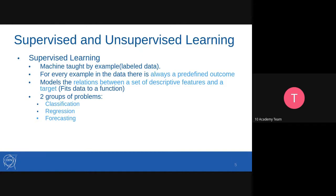The next problem type is regression. In regression, we are not trying to classify data but rather calculate a specific value from the training data, and predict a specific value on test data. Finally, there is forecasting — the process of making predictions about the future based on past and present data, commonly used to analyze trends. You mostly get time series data where data is labeled based on time, and we try to get a specific pattern. It's mostly used in sales prediction, annual budget, and income prediction.